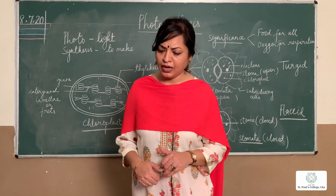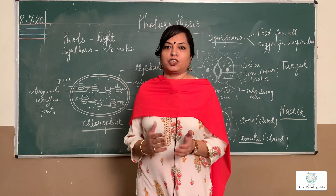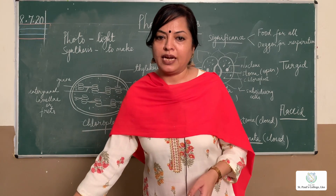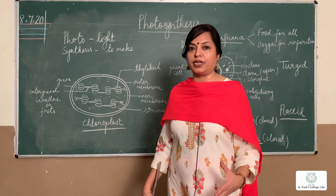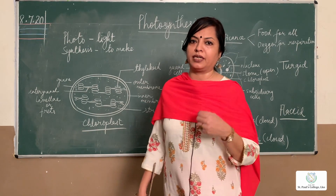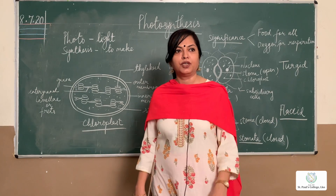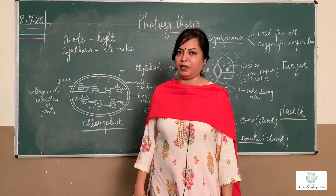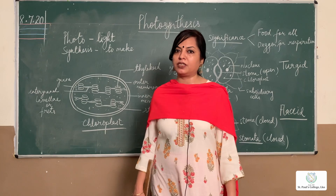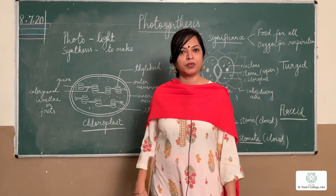Our next topic is how stomata regulate their opening and closing by changing their turgidity levels. We all know that stomata are present on the surface of the leaf. Leaves are of two kinds: dorsiventral and isobilateral. A dorsiventral leaf has more stomata on the lower side, while an isobilateral leaf has equal numbers on both surfaces. So the correct answer for the location of stomata is that they are present on both the upper and lower epidermis of the leaf.